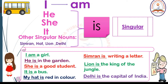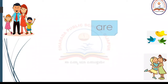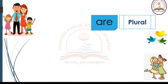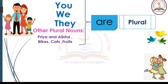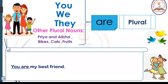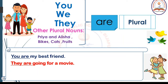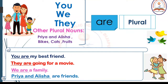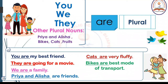Children, we use is with all singular things, a person or a place. Whereas we use are when we are talking about more than one person, a place, or a thing. Are is always used with you, we, they, or other plural nouns like Priya and Alicia, bikes, cats, fruits. For example: you are my best friend. They are going for a movie. We are a family. Priya and Alicia are friends. Cats are very fluffy. Bikes are our best mode of transport. Fruits are very healthy.